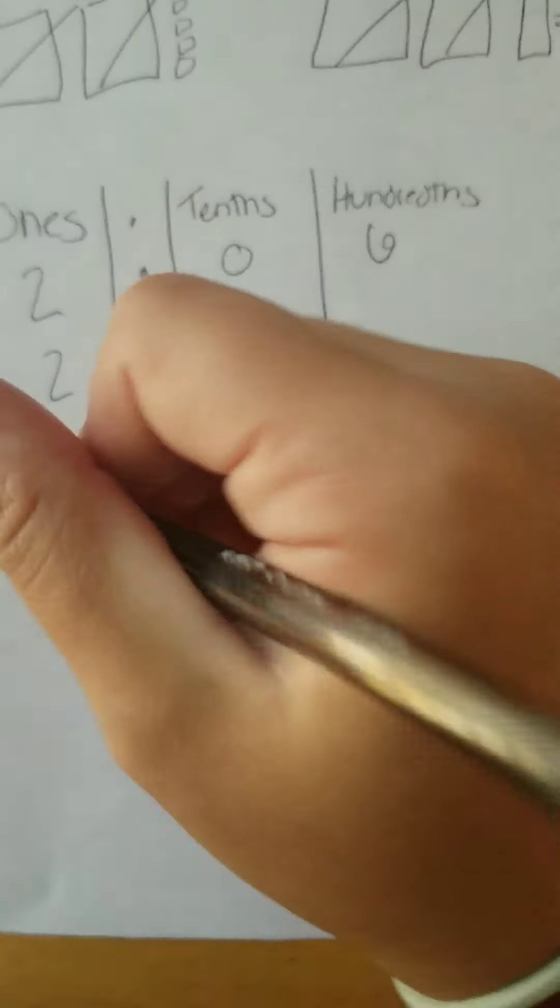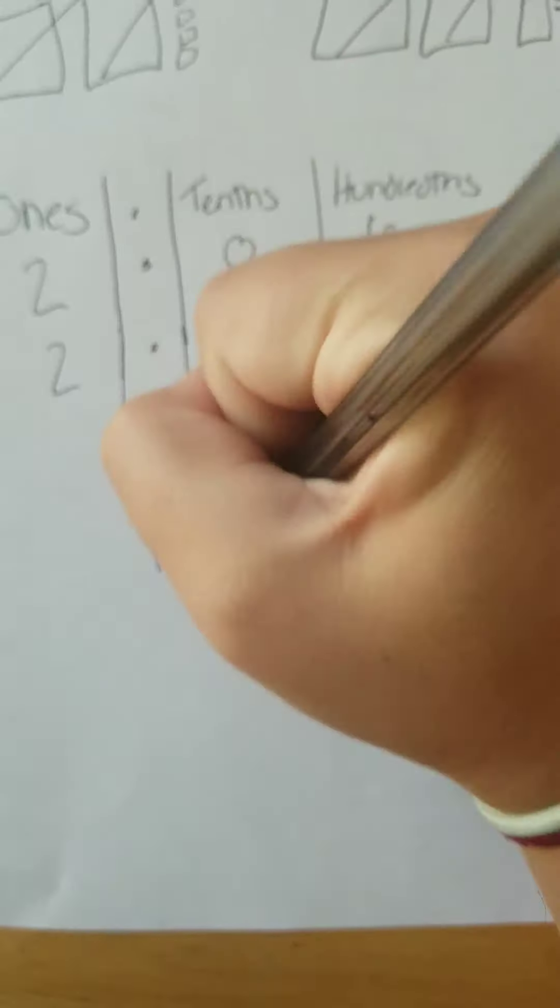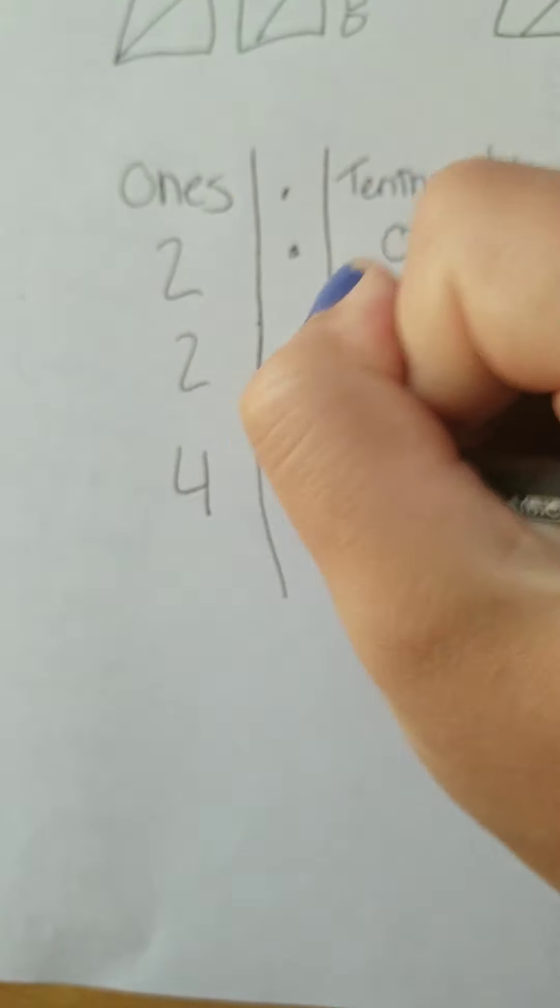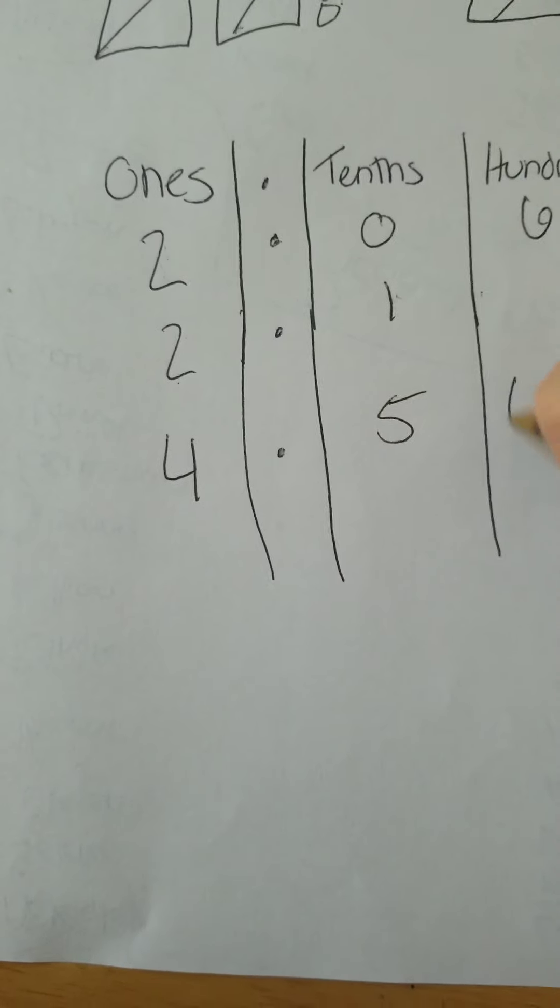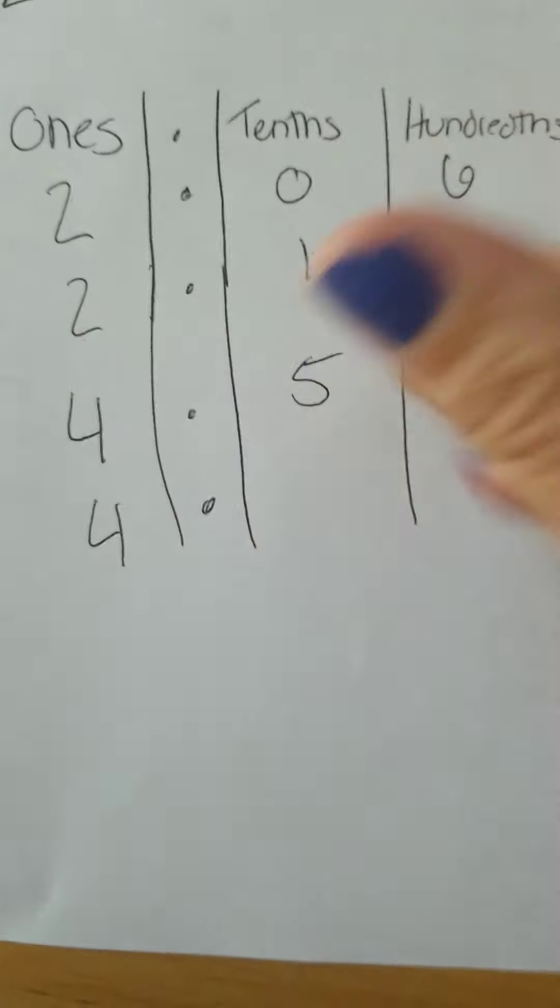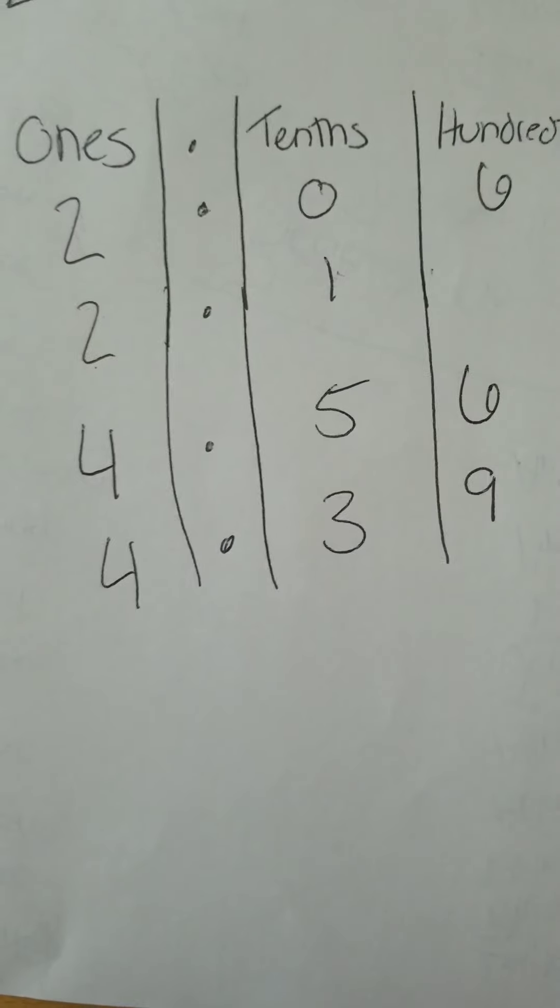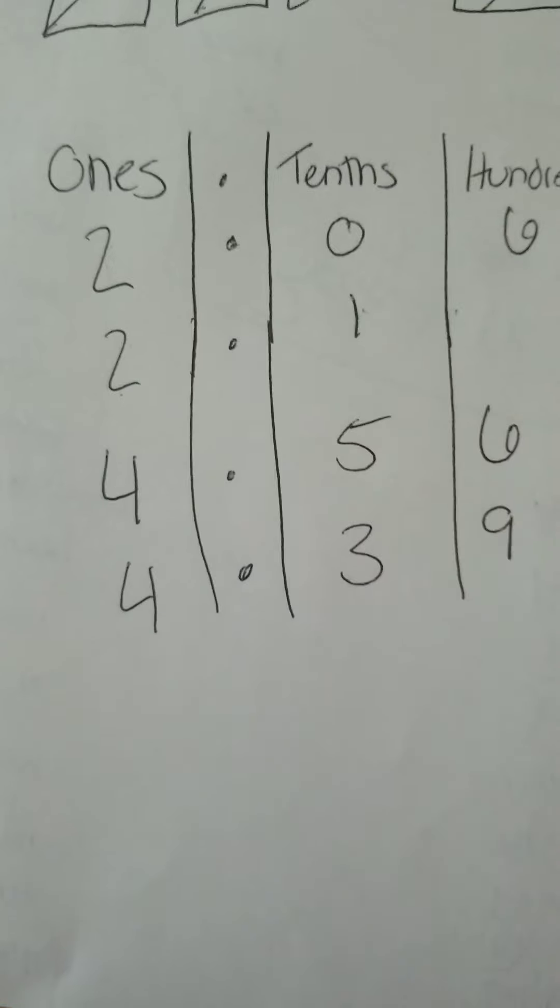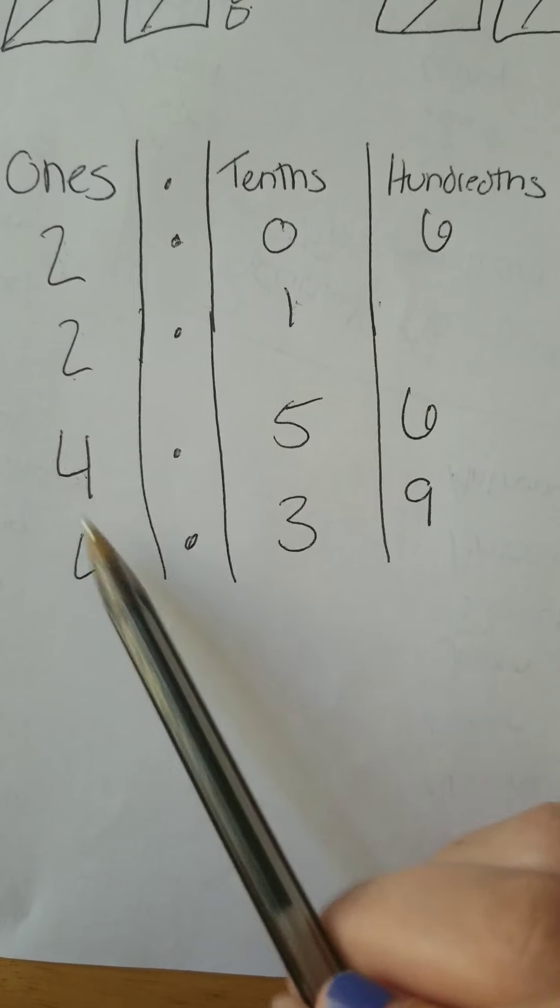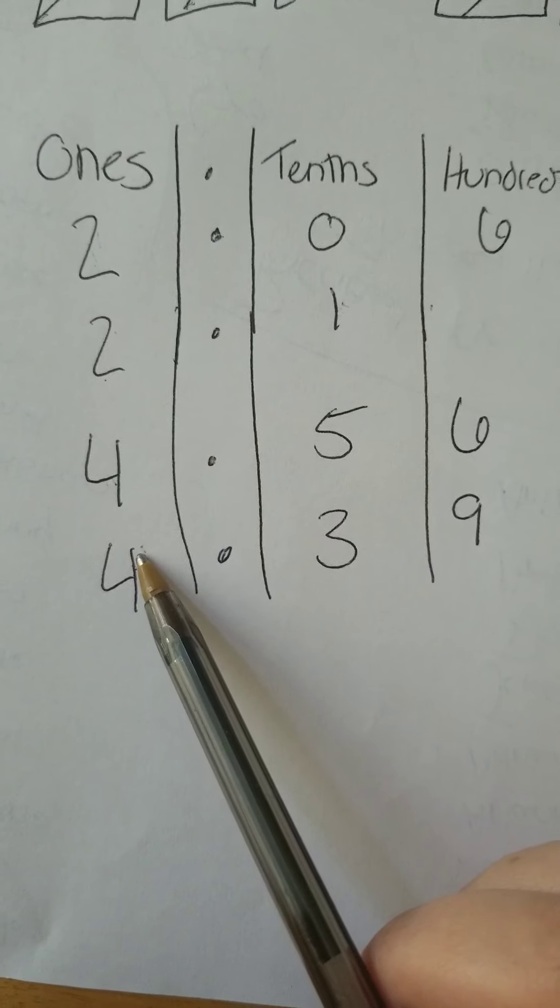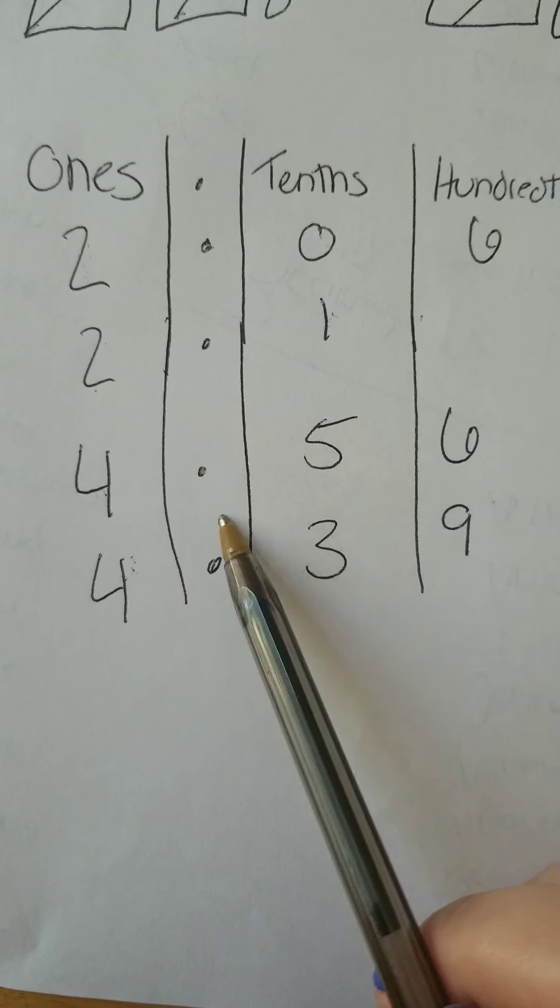Let me try that with some decimals we haven't tried yet, though. So I've got my ones, I've got my tenths, and I've got my hundredths. If I gave you four and fifty-six hundredths, and four and thirty-nine hundredths, again, I start all the way from the left. So if I look at the left two numbers first, they're the same. They're the same. So therefore, they're equal so far.